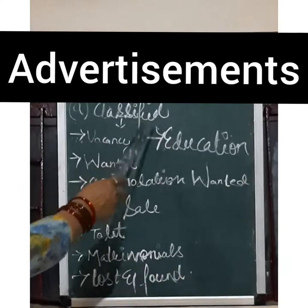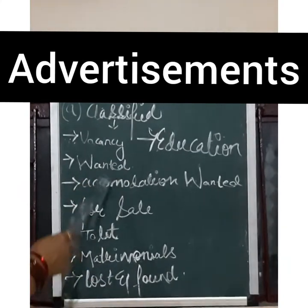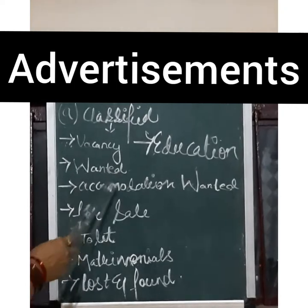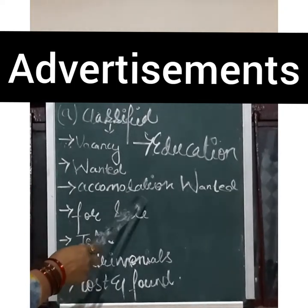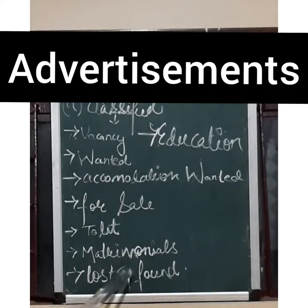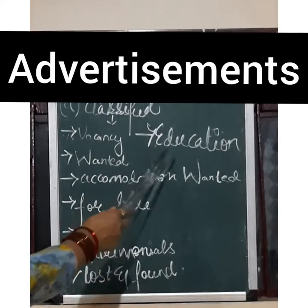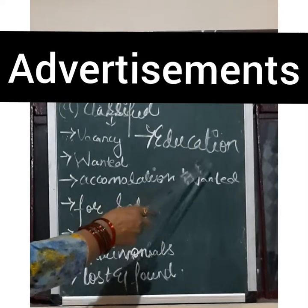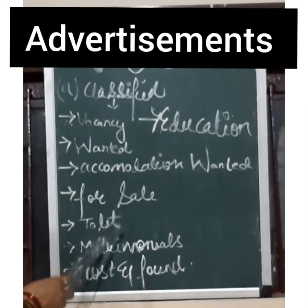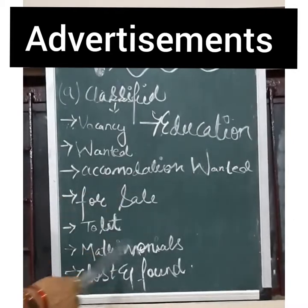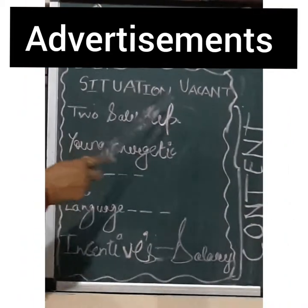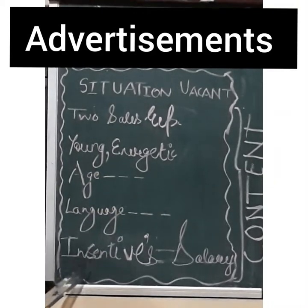Classified advertisement has been divided into various parts: situation vacant, situation wanted, accommodation wanted, for sale, to let, matrimonials, lost and found, and educational advertisements. I will be giving you an example of each and the format I will draw on the board so that the concept can be more clear to you. We have got a format of situation vacant.